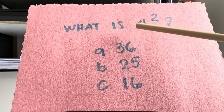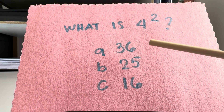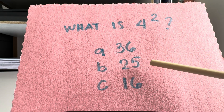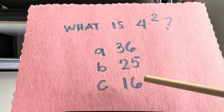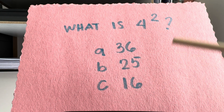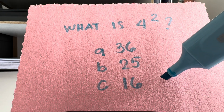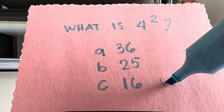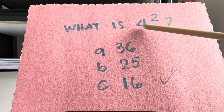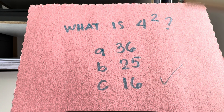Next, what is 4 squared? Is it letter A, 36? Letter B, 25? Or is it letter C, 16? And the answer is letter C, 16. 4 squared is equal to 16.